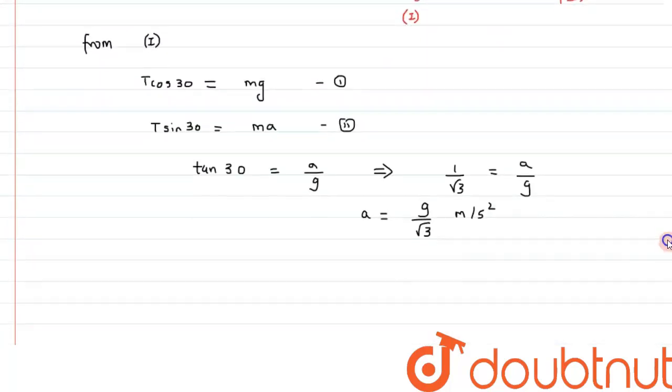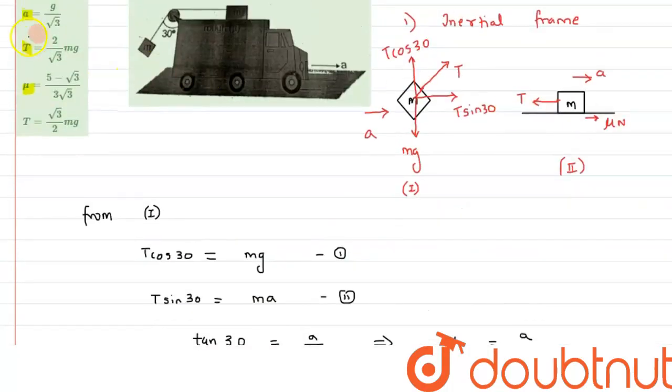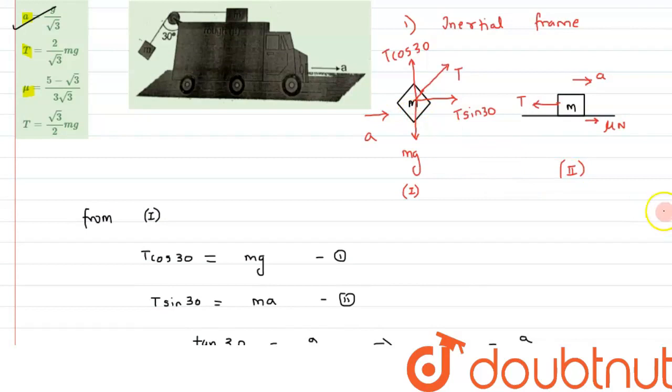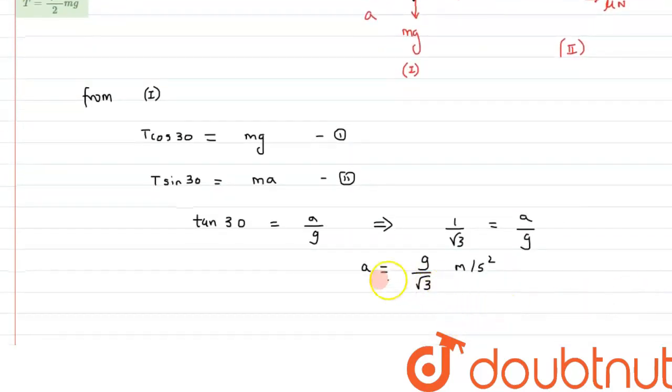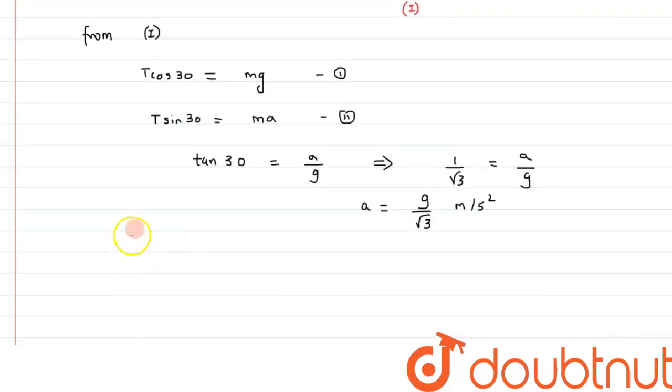Alright, so now let's move on further. We can say first part of the question we have done, that is acceleration is g by root 3. Now we have to calculate the tension. So for tension, we can see clearly, if we substitute this value of a in equation 2, we can get, or we can say from equation 1, any of the equation we can take from equation 1, we can say...